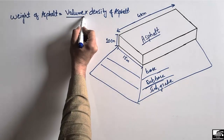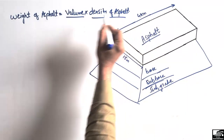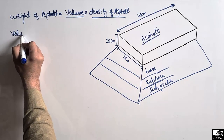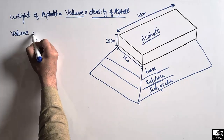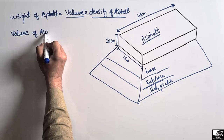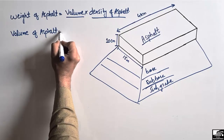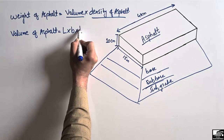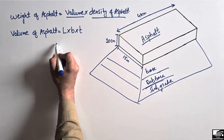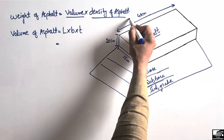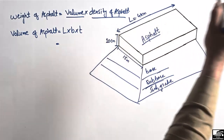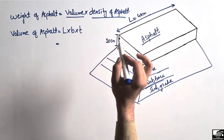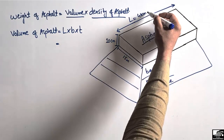First, we determine the volume of asphalt. The volume of asphalt equals the length of asphalt multiplied by the breadth of asphalt multiplied by the thickness of asphalt. The length of asphalt is 4 kilometers — since we want all units in meters, we convert this to 4000 meters.